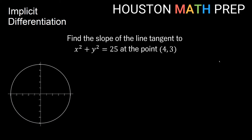With implicit differentiation, I just take the derivative of the entire equation straight across with respect to x all at once. Starting with x squared plus y squared equals 25, we'll go one term at a time from left to right. Remember that any term that has a y value in it will need to use the chain rule, and we'll get a y prime or a dy/dx. I'm going to write dy/dx here so it's super clear when we get a derivative of y.